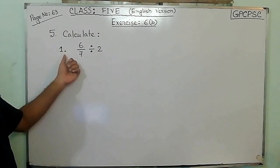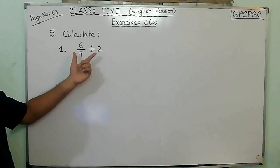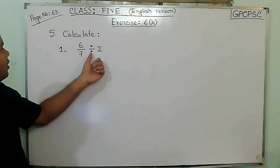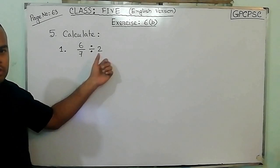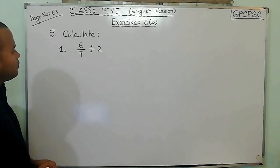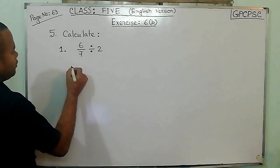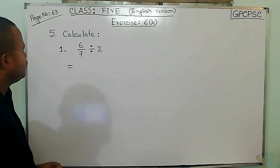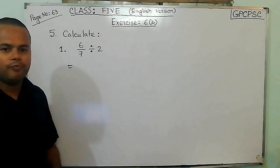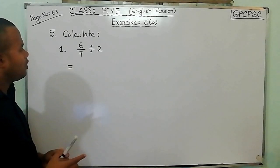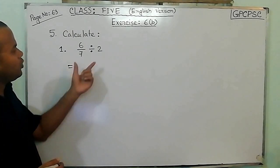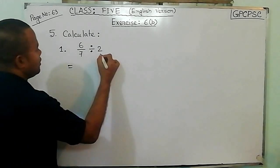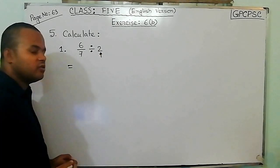Here, question number 1. We have a problem that is 6 by 7, division 2. Follow me. To solve this problem, we have to convert this. We can do it easily by converting the 2 into its reciprocal.